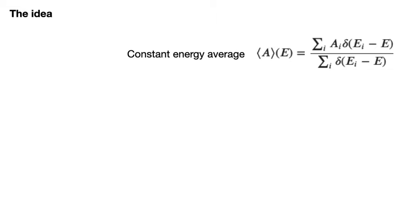As I explained in previous videos the constant energy average for the property A is given by this expression here. The sums in this expression run over all the microstates the system can adopt. A_i is the value of the property A in the ith microstate and delta is a Kronecker delta that is 1 when E_i the energy of the ith microstate equals E the system energy. This delta is 0 if this difference takes any value other than 0.